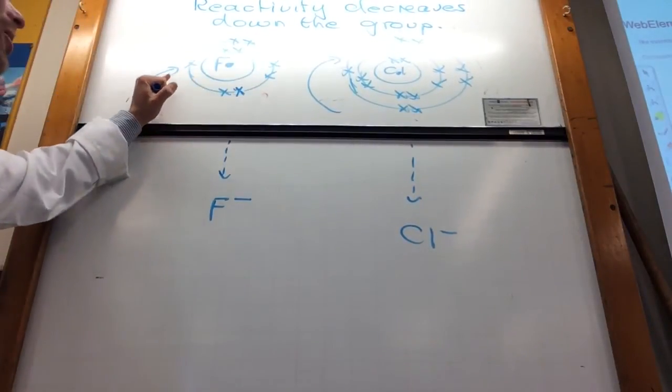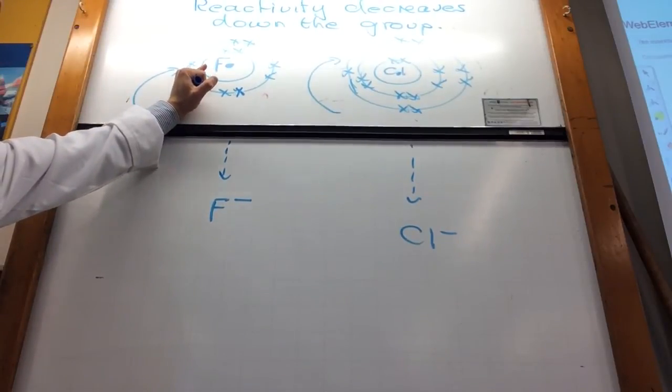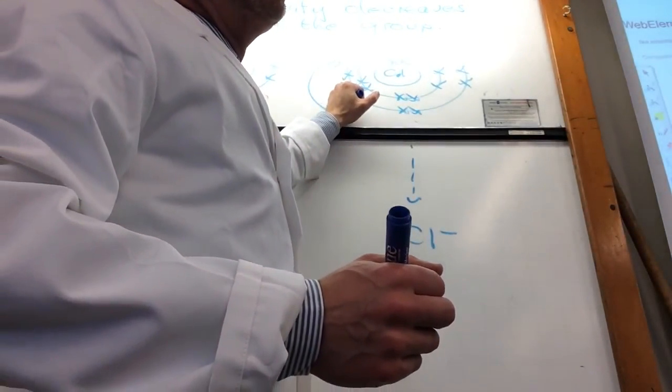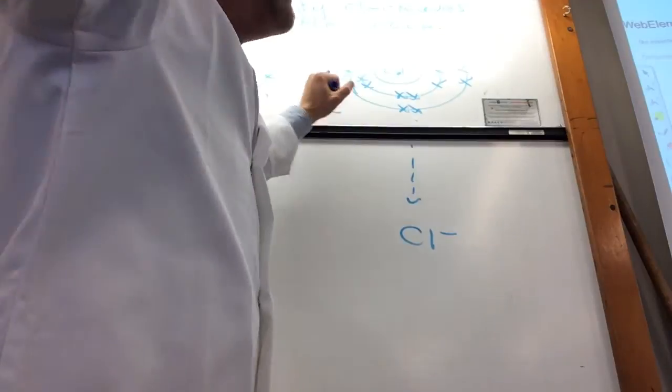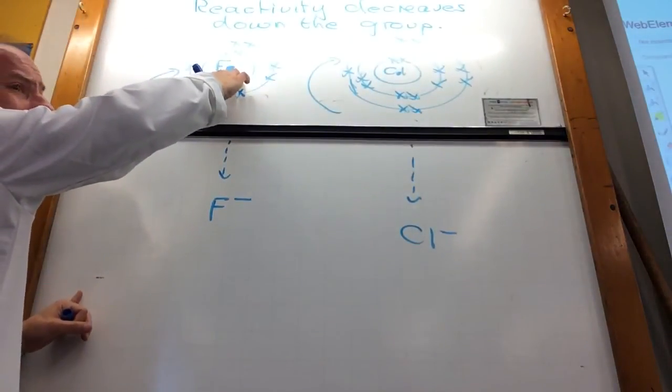Can you see that this electron is coming in and he's coming into a shell that's much closer to the nucleus? Whereas this one is coming into shell number three. That's much less attractive.